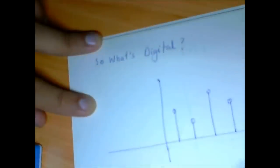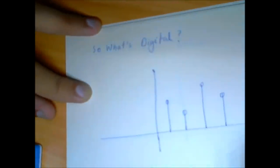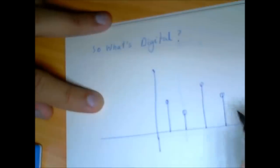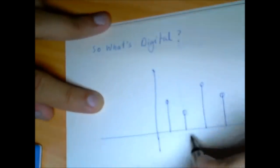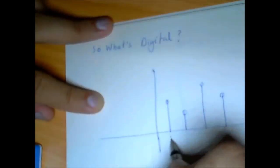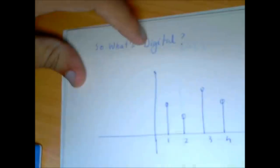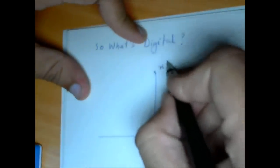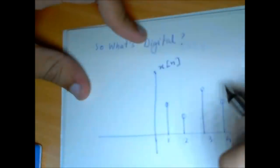So what we did in order to convert a continuous time signal to a discrete time signal, what we did is discretized the time. So we chose only specific values of time. So we selected only 1, 2, 3, and 4.